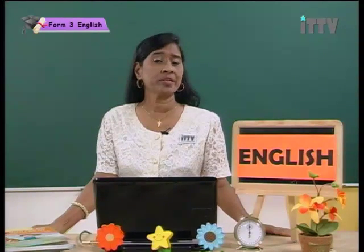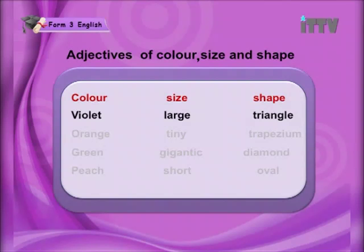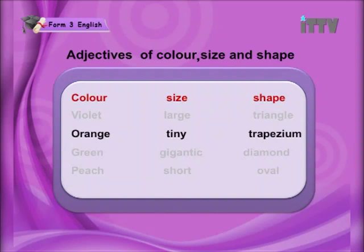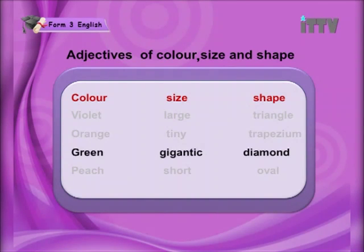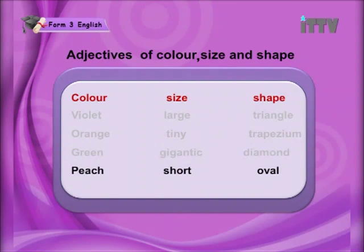Adjectives tell you more about what is going to be said. Examples: color violet, size large, shape triangle. Next: color orange, size tiny, shape trapezium. Next: color green, size gigantic, shape diamond. Next: color peach, size short, shape oval.